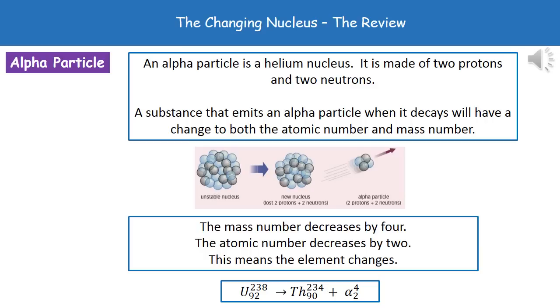If we have a look and see what that actually means in terms of numbers. Because we're losing two protons and two neutrons, that means the mass number is going to decrease by four. The atomic number, however, will only decrease by two because that, obviously, is only the two protons. Because we're changing the atomic number, then we've changed the element as well.